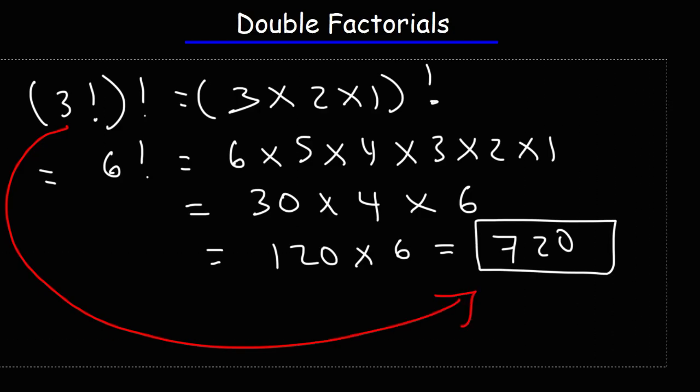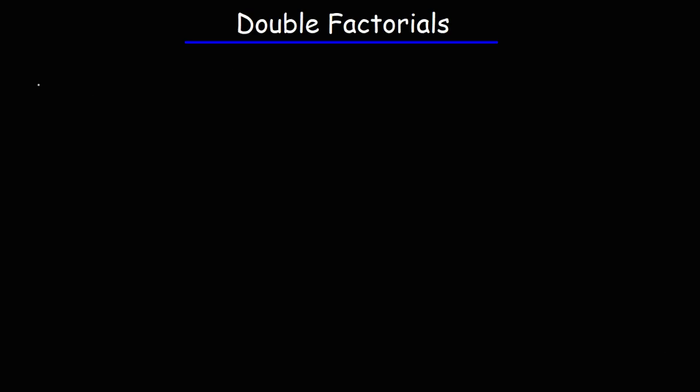Now, for the sake of practice, go ahead and try these examples. 7 factorial, the double factorial of 10, and the iterated factorial of 4. Well, let me use something other than 7 factorial. We covered that one. Let's make this 9 factorial.